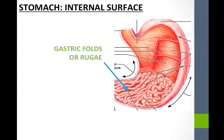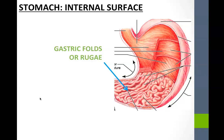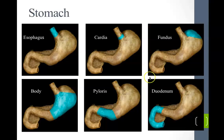Looking at the internal view of the stomach, we see folds called rugae, or gastric folds. Erosion of this mucosa can cause an ulcer due to high acidity, or if stomach contents move into the duodenum without being neutralized, a duodenal ulcer can result. The rugae look like wavy lines, reminding me of reggae music, and they function to increase our surface area within the stomach.